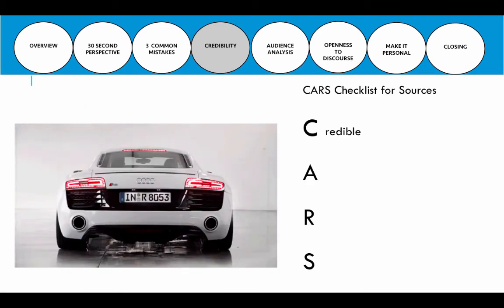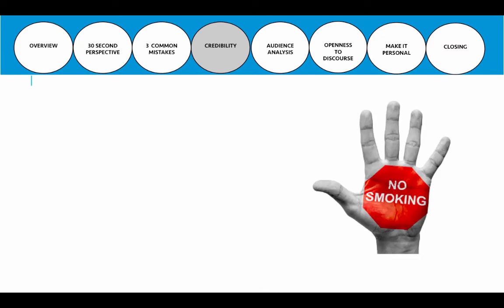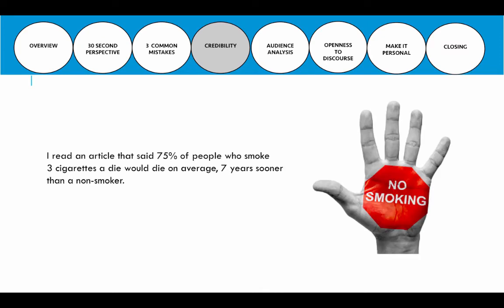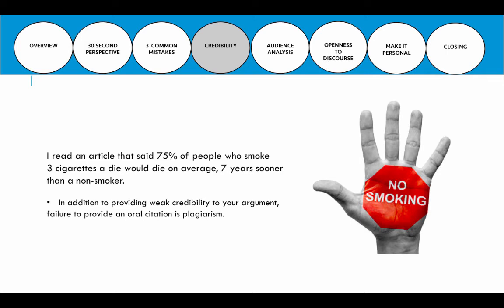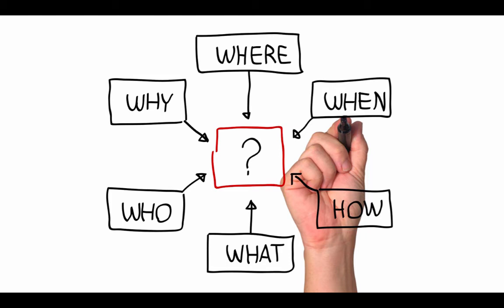To recap the CARS checklist: is your source credible? Is it accurate? Is it reasonable? And is it supported? Now let's talk about how you can implement this in your speeches. Instead of saying 'I read an article that said 75% of people who smoke three cigarettes a day would die on average seven years sooner than a non-smoker' — that's weak credibility and provides no oral citation, which is effectively plagiarism. Students do this a lot and it's just not credible. So what's the alternative?